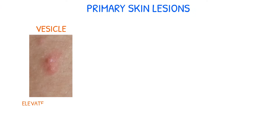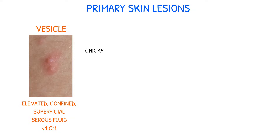A vesicle is an elevated, confined, superficial collection of serous fluid with a diameter of less than one centimeter. Chicken pox, shingles, and second degree burns are all instances of vesicles.